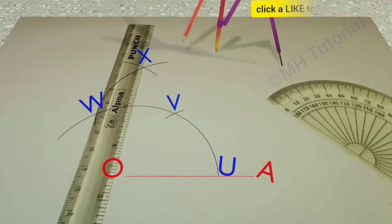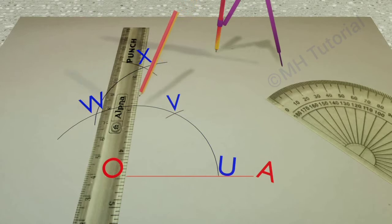Align the scale along O and X and take an intersection against the first circle arc. This point of contact is Y.